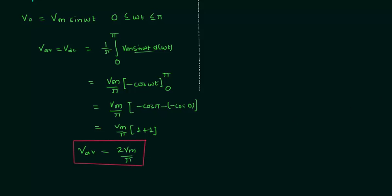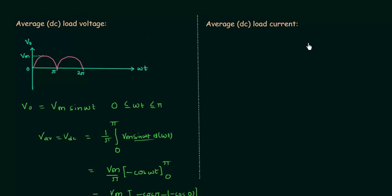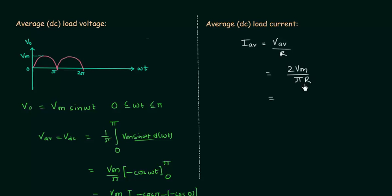Using V_average = 2Vm/π, we can obtain the average load current. The average load current is equal to average load voltage divided by R, where R is the load resistance. Since Vm/R is Im — the peak value of load current — we get I_average equal to 2Im/π.